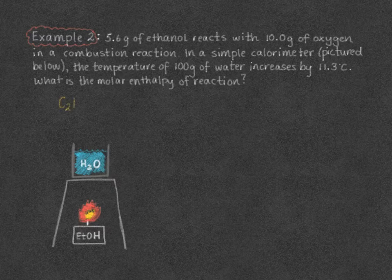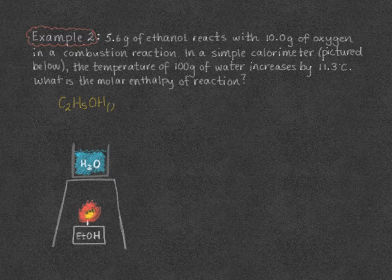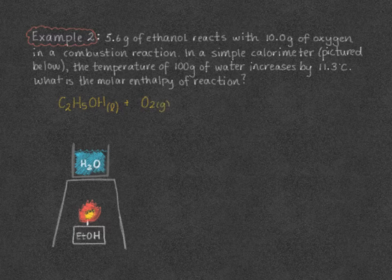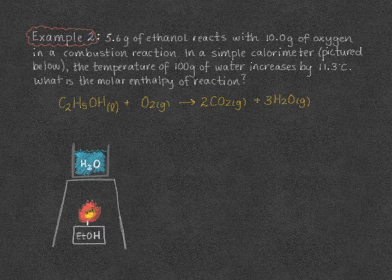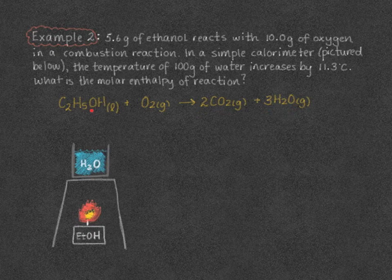Ethanol is C₂H₅OH. If you forget formulas for organic compounds, they can be found on pages 4 and 5 in your data booklet, in the thermochemical table. When we combust something, we combine it with oxygen and form carbon dioxide and water vapor — anytime we combust in an open environment, we form water vapor. To balance: we put a 2 in front of CO₂ to balance carbons, a 3 in front of water to balance hydrogens. That gives 4 oxygens from CO₂ plus 3 from water equals 7; with 1 in ethanol we need 6 more from O₂, so we put a 3 in front. Balanced reaction: C₂H₅OH + 3O₂ → 2CO₂ + 3H₂O.